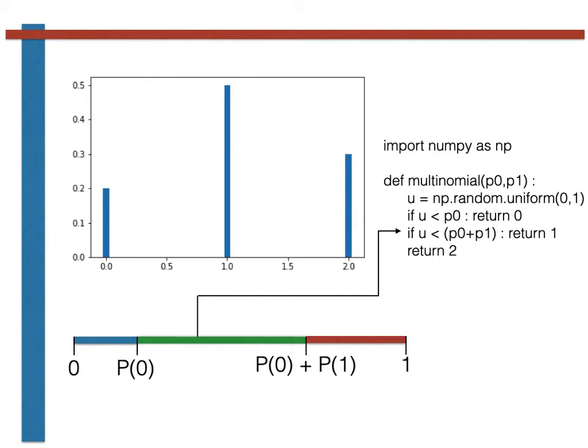Notice that this second statement is checking if u is greater than p0 and less than p0 plus p1. If u was less than p0, we would already have returned from the code and would never have evaluated the truth value of this second if statement. If neither of the two if statements have been triggered, then u must fall within the red segment of the line, which has a length proportional to the probability of getting a 2. We thus return 2 in this final case.